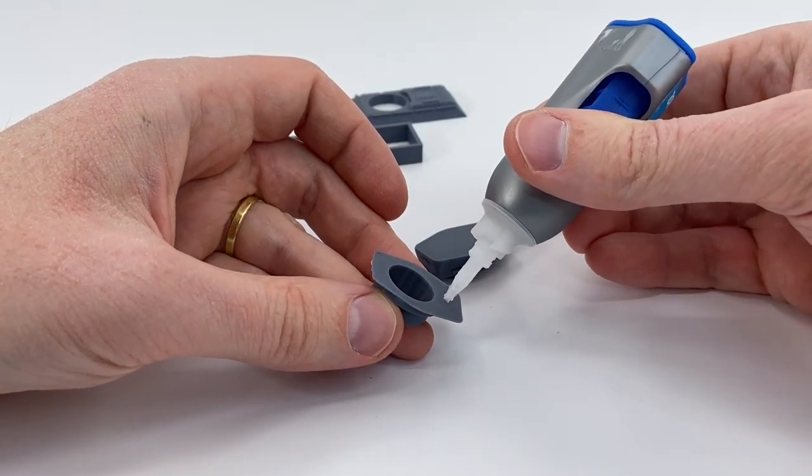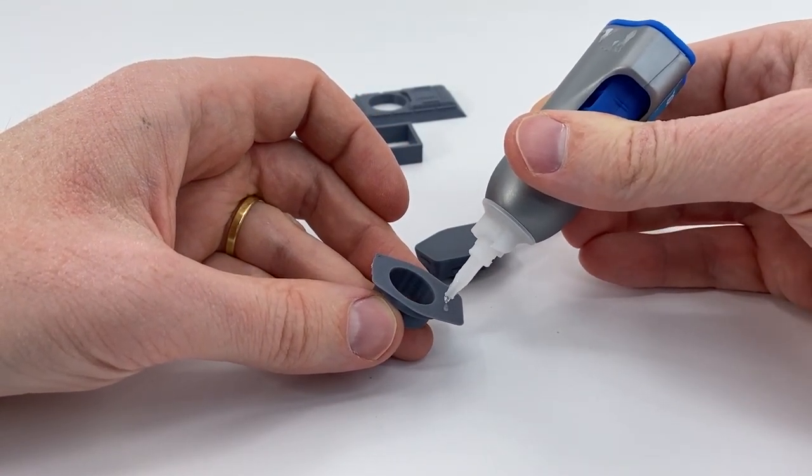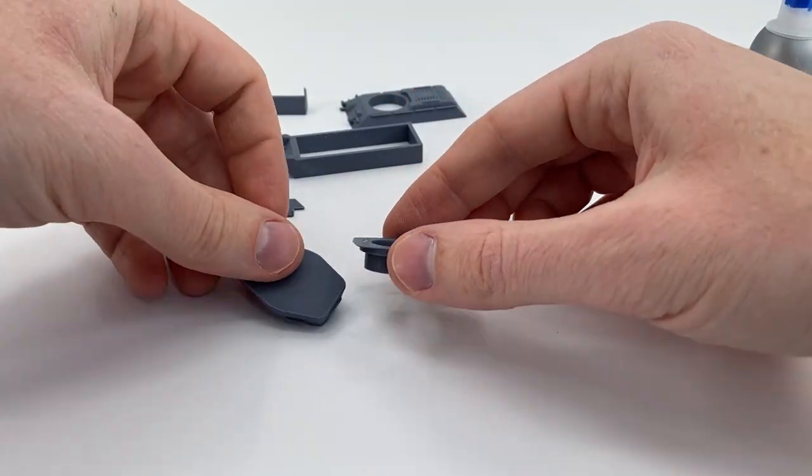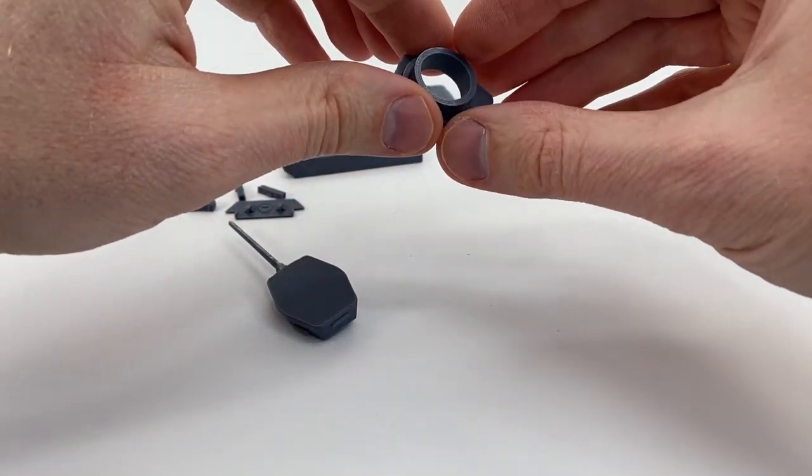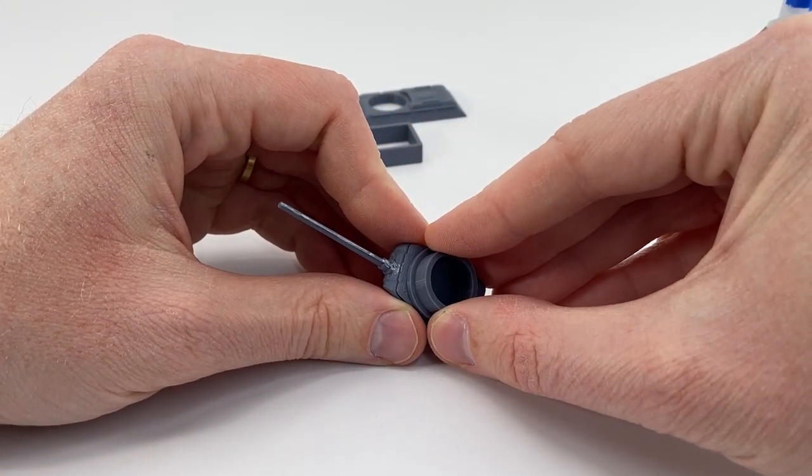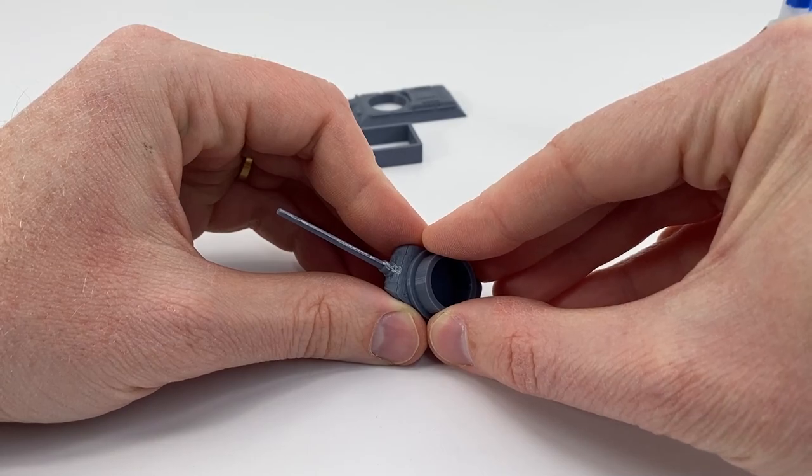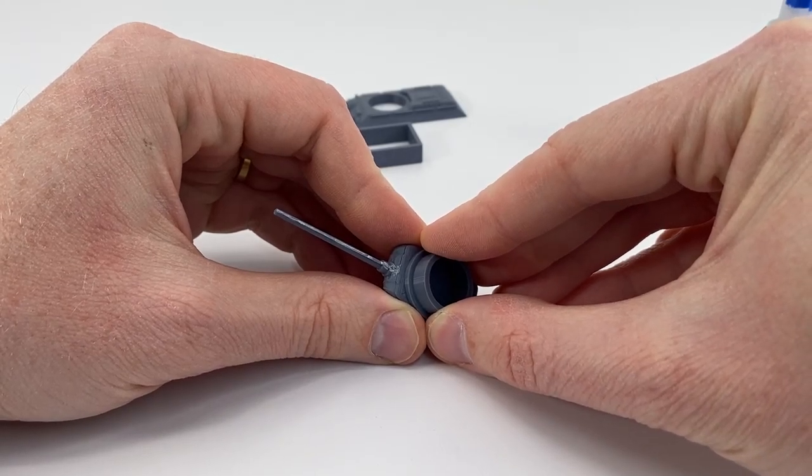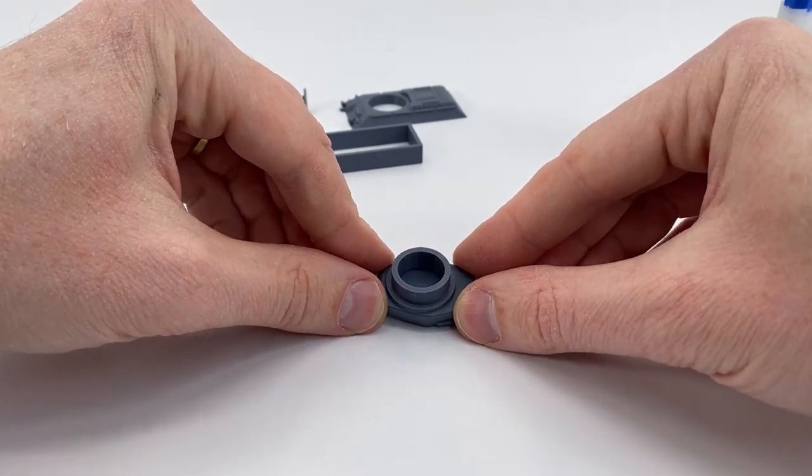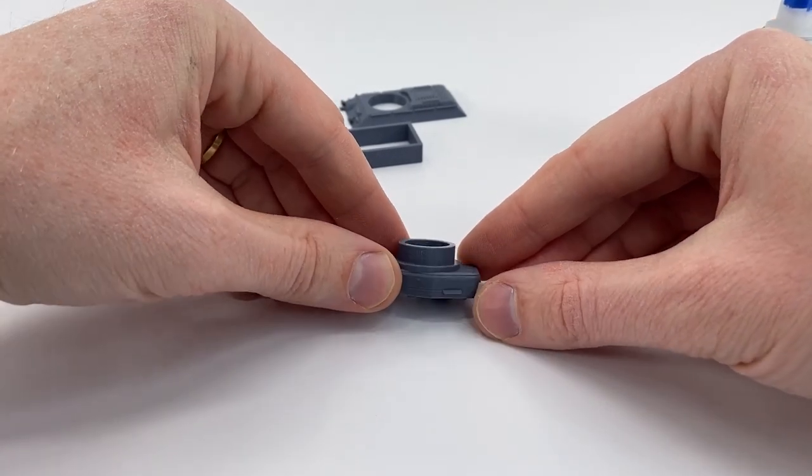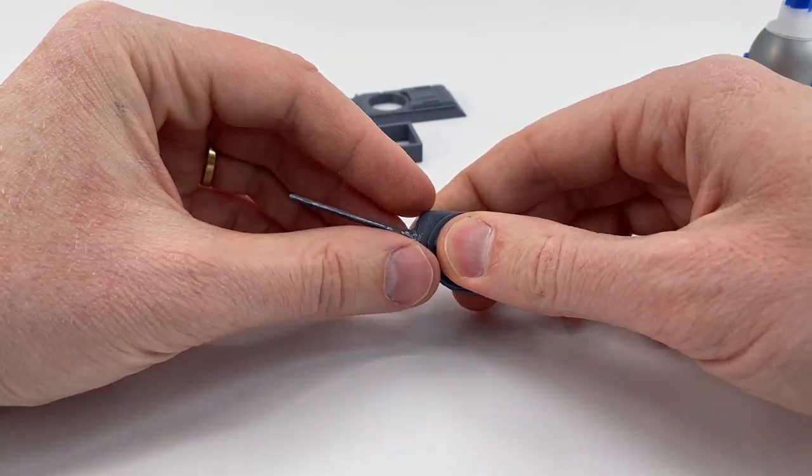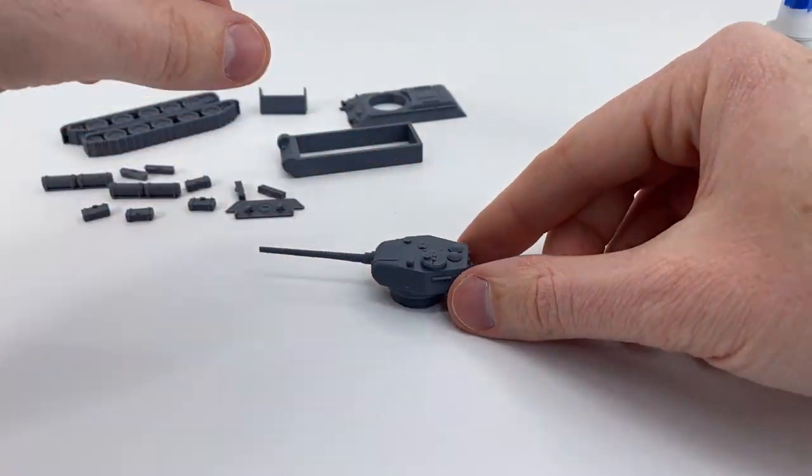So just put a bit of glue there and some glue there. I'm using this Loctite glue. The clippers and the Loctite glue are available at the website too by miniaturetankscompany.com. So try to get this really nicely glued together like that.